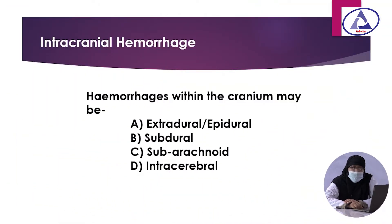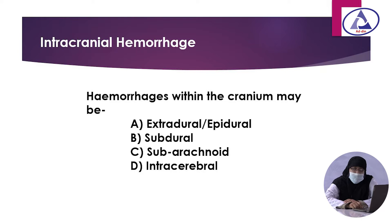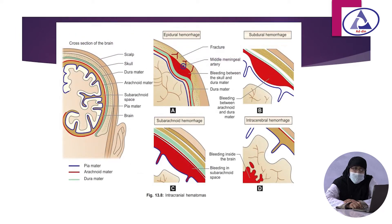Intracranial hemorrhage is a hemorrhage within the cranium that may involve head injury. The classification includes extradural or epidural hemorrhage, subdural hemorrhage, subarachnoid hemorrhage, and intracerebral hemorrhage. This classification is termed according to the placement of the hemorrhage within different layers of the meninges.